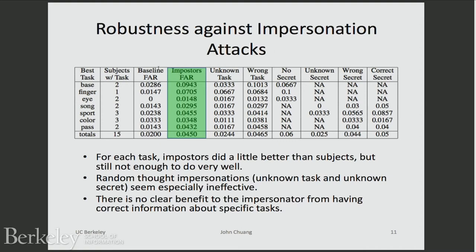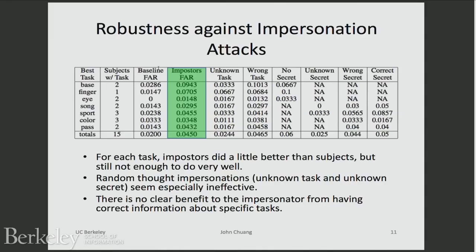In a follow-up study we considered an impersonation attack. The key takeaway: even if you go to the worst case — where we give the attacker the correct secret, the task, and their secret — the false acceptance rate, basically the probability that an attacker successfully attacks the system given the correct secret, is 5%. Compare this against passwords: if I told you my password, you should get in close to 100% of the time. In this case, even if I told you — even if my password were published in a news article and you went and found it — you still only have a 5% success rate.